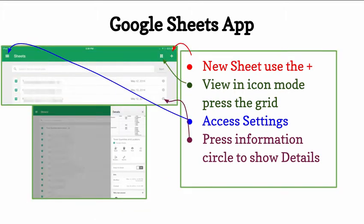Google Sheets is very similar. Press the plus sign for a new sheet. View in icon mode or grid view. Access the settings. Press the information button to show details.